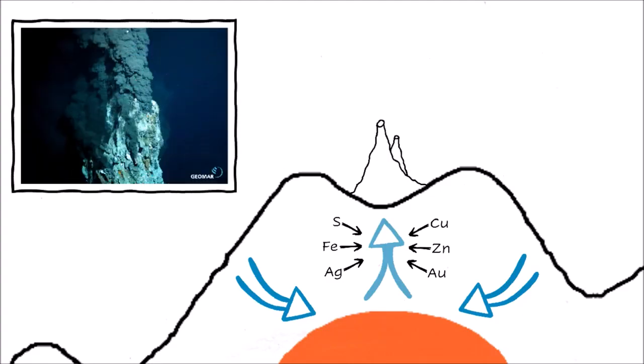They can be thousands of years old and grow up to 60 meters tall. A lot of the precipitated minerals also leave the chimney as a plume, looking like smoke coming out of an industrial factory.